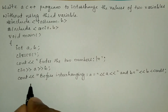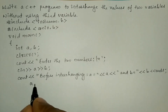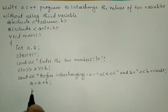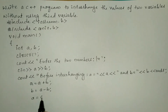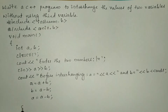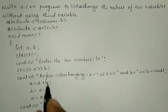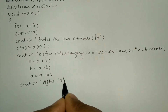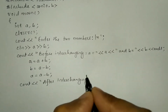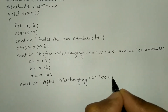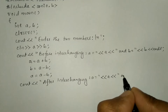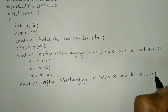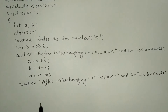Now I am going to write the logic of interchanging two numbers without using a third variable. I write a is equal to a plus b, semicolon; then b is equal to a minus b; and a is equal to a minus b, semicolon. After this logic I write a cout statement displaying 'after interchanging a is equal to', stream insertion operator a, 'and b is equal to', stream insertion operator b, endl, semicolon.